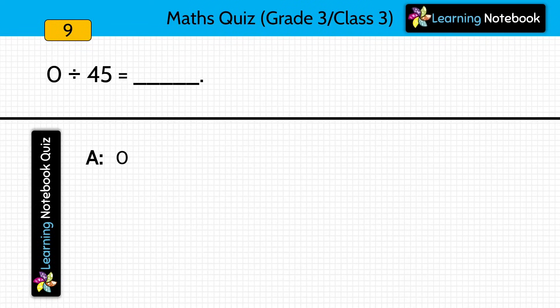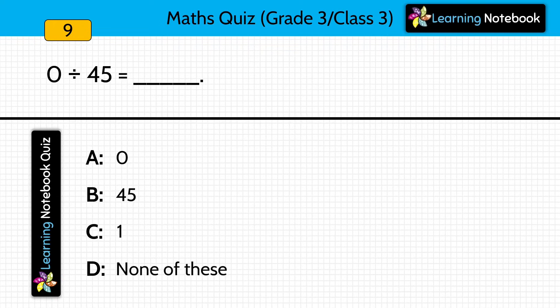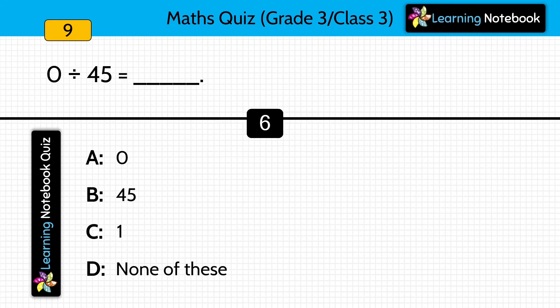Question nine: 0 divided by 45 equals blank. Here are the options: 0, 45, 1, or none of these.